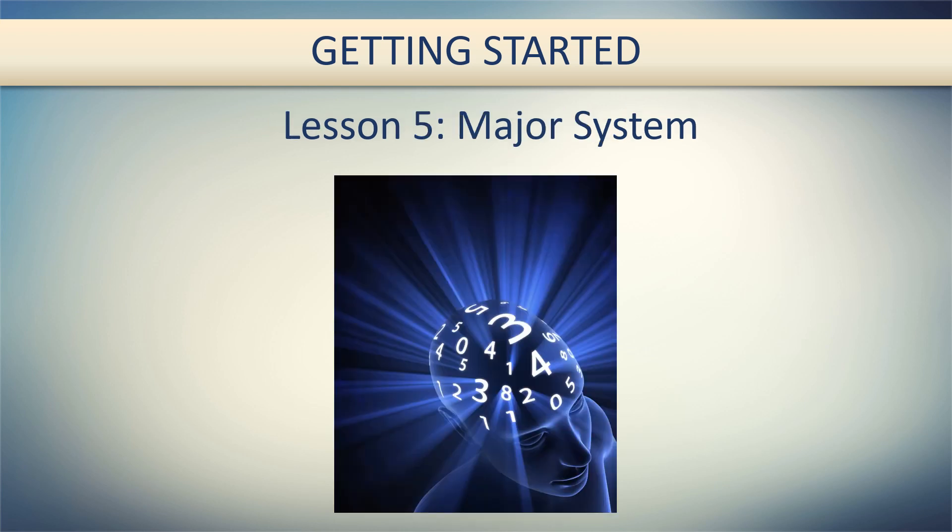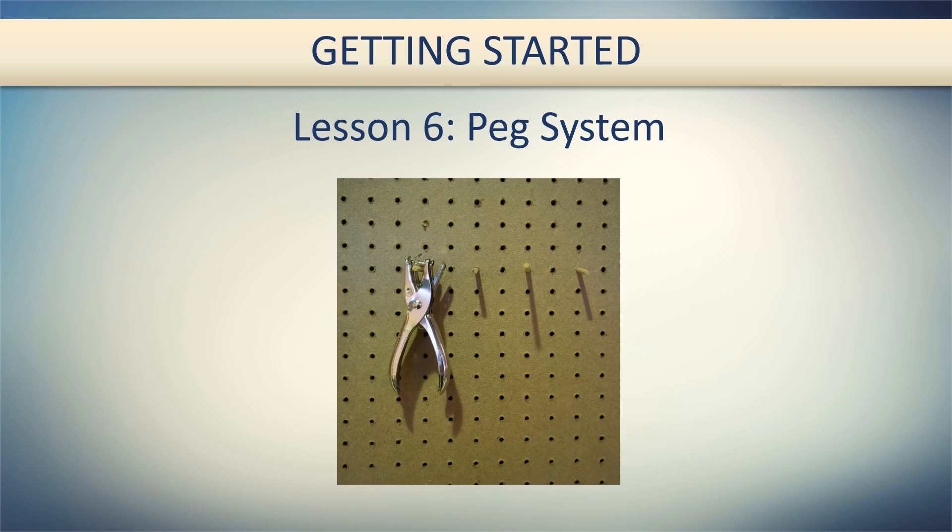Lesson 5 is the Major System. The Major System is primarily focused on helping you remember complicated numbers. Lesson 6 is the Peg System. The Peg System helps you remember things in order and leverages heavily the Major System that you learned in Lesson 5.